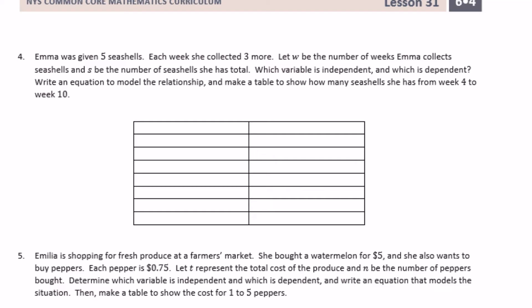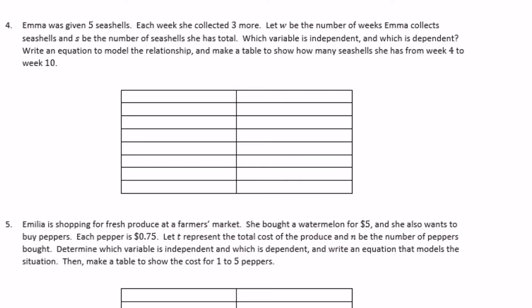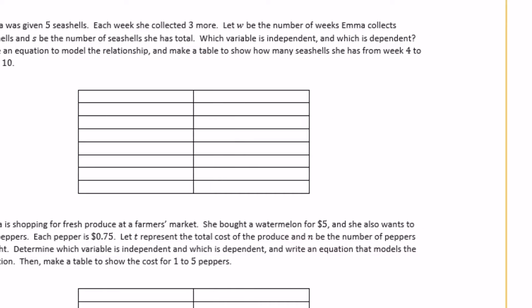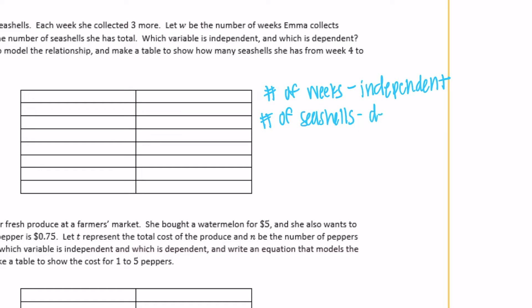Number four. Emma was given five seashells. Each week she collected three more. Let W be the number of weeks Emma collects seashells and S be the number of seashells she has total. Which variable is independent and which is dependent? Write an equation to model the relationship and make a table showing how many seashells she has from week four to ten. The number of weeks is the independent variable, and the total number of seashells is the dependent variable because it depends on the number of weeks.